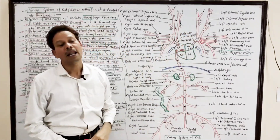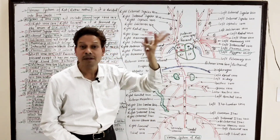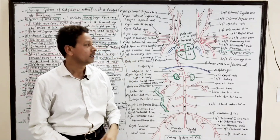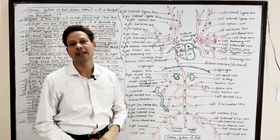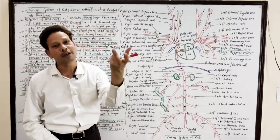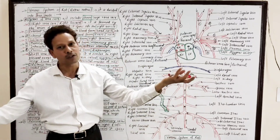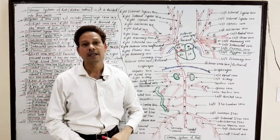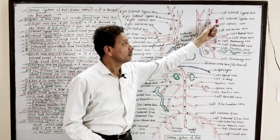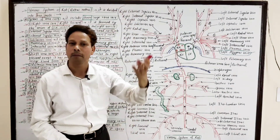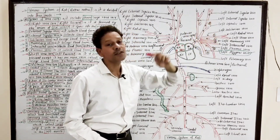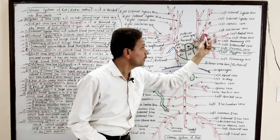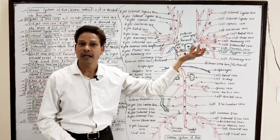The left precaval is similar to the right precaval, except that on the left side there is one additional blood vessel — a seventh vessel. This is the left azygous vein, which brings blood from the posterior intercostal muscles of the ribs. So the left precaval is formed by the union of seven vessels. The first is the left internal jugular, which receives blood from internal parts of the head region. The third is the left subclavian, which brings blood from the left side of the forelimbs.